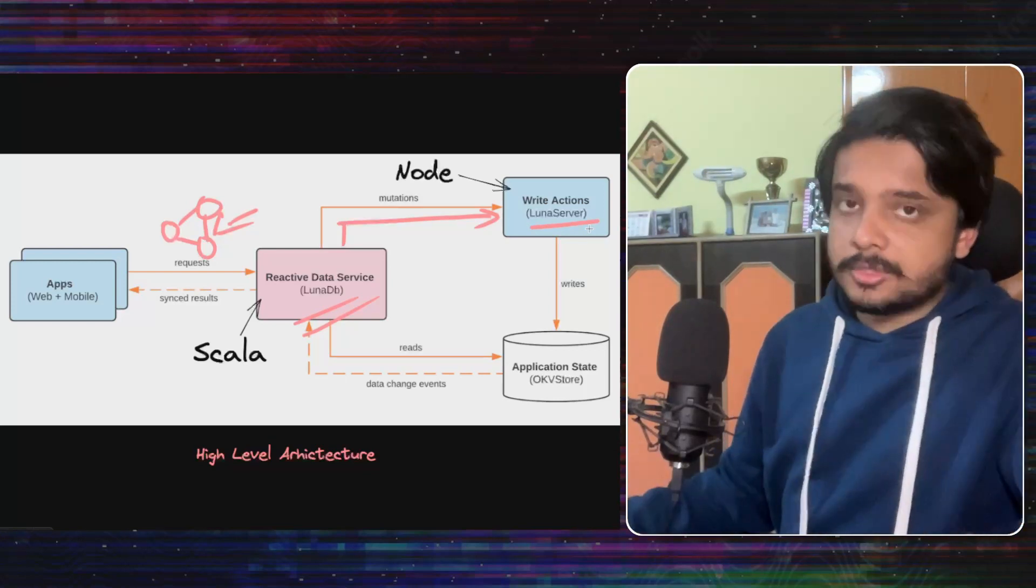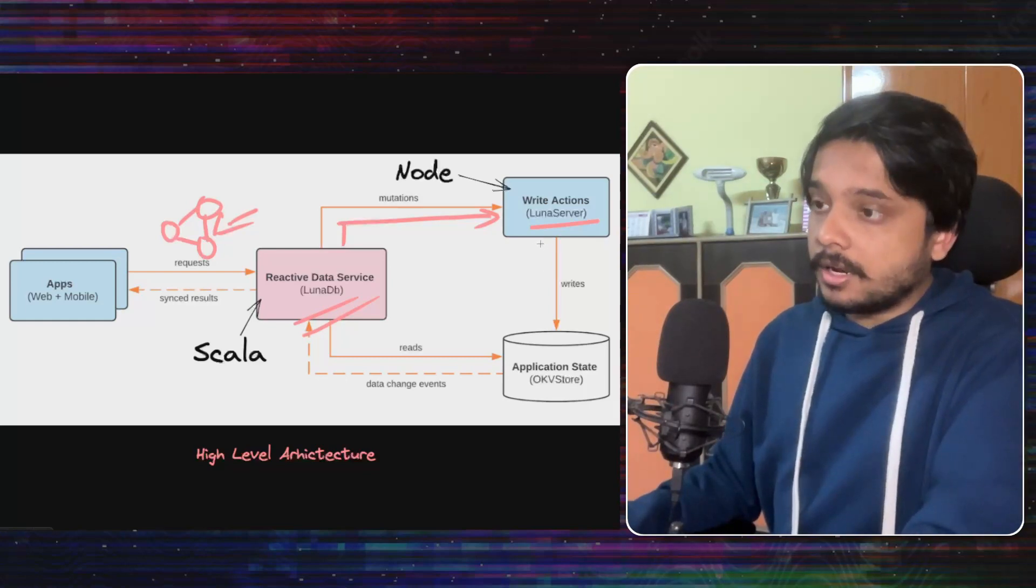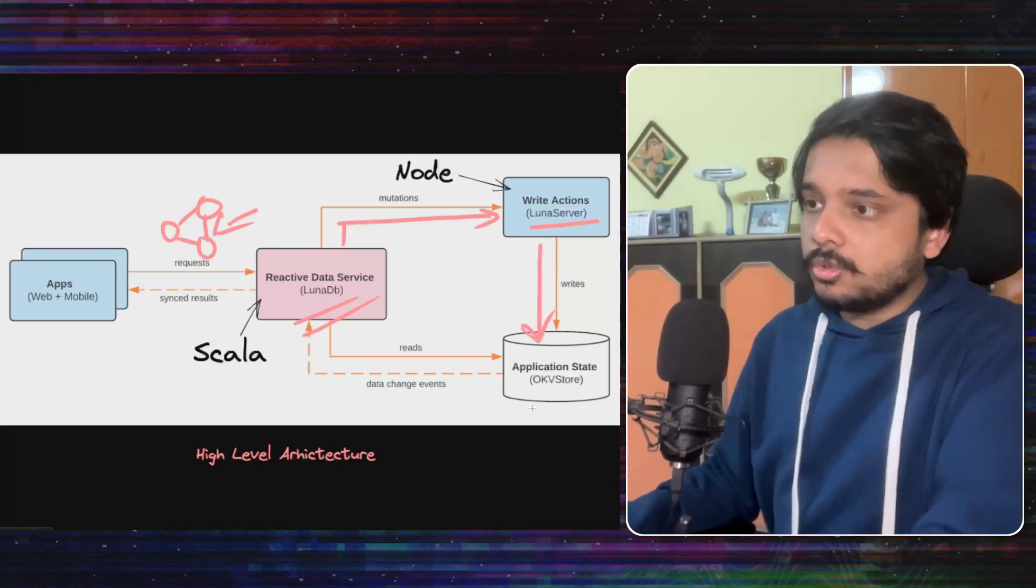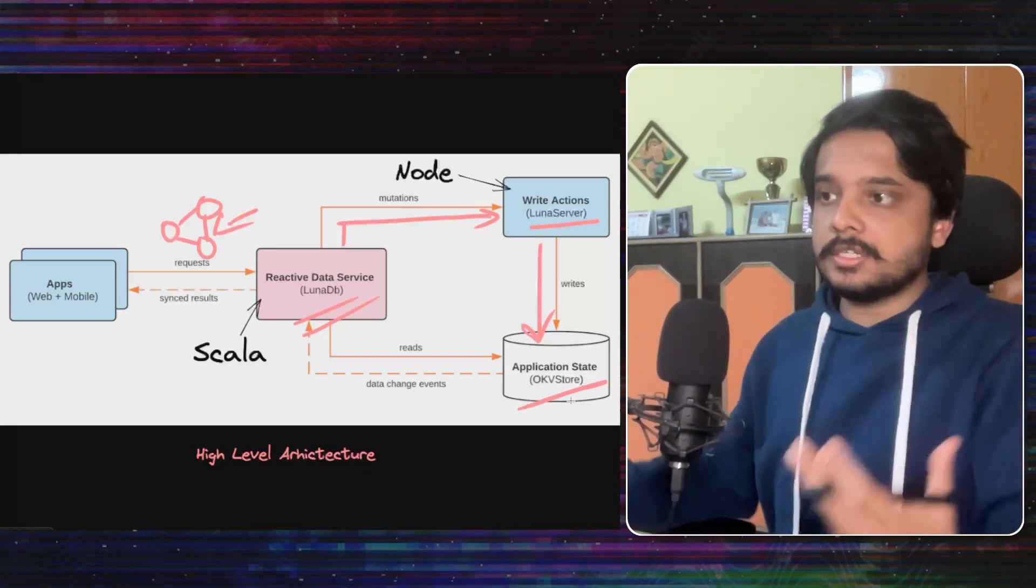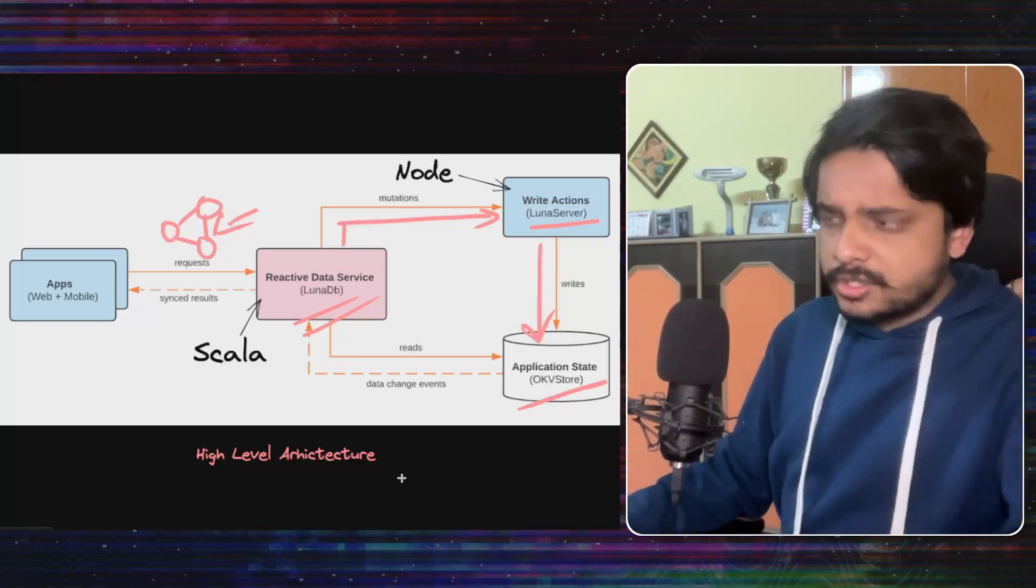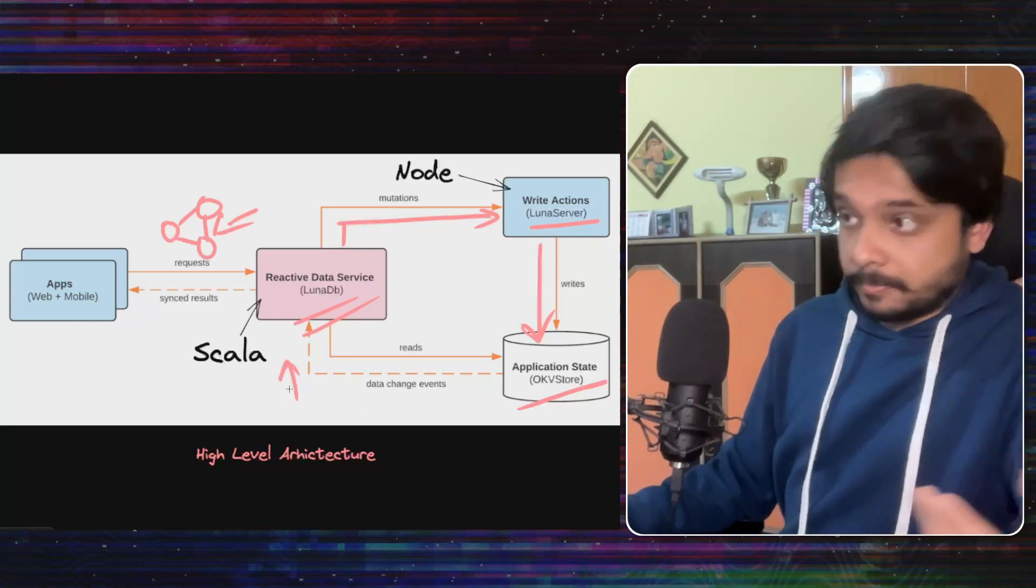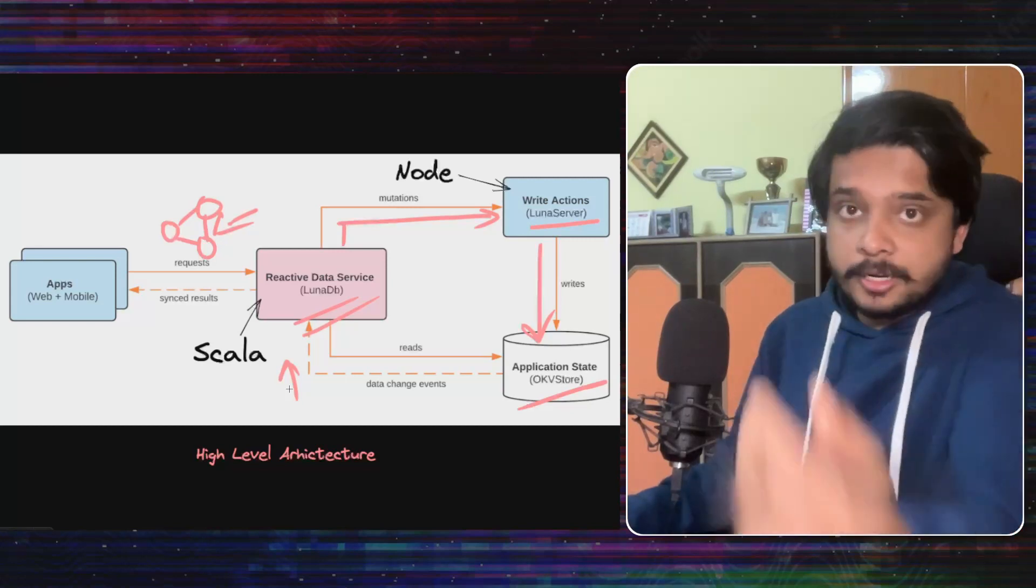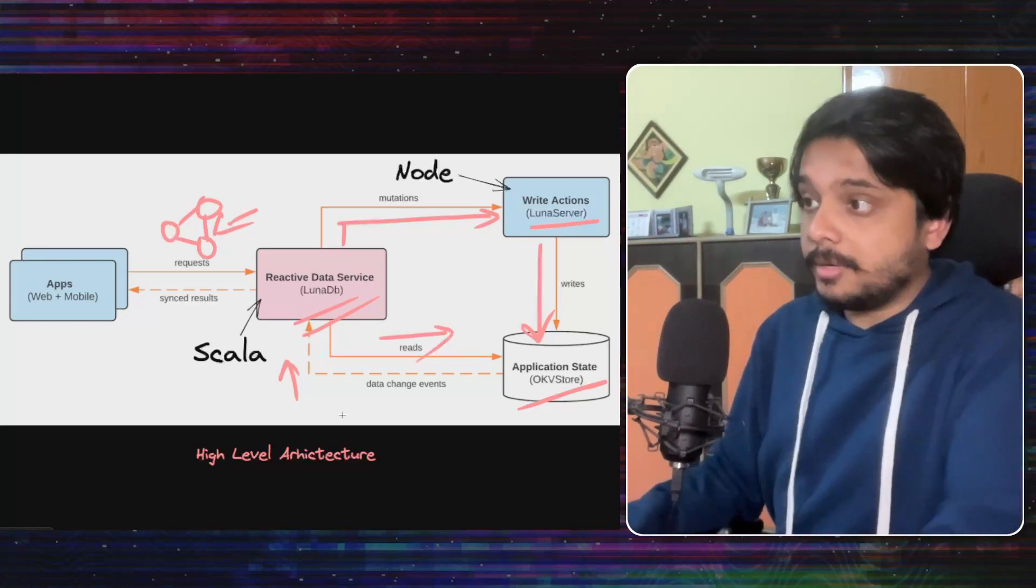Now, this Luna server is also a custom service they wrote in Node to orchestrate all this process. So the Luna server would write that data to that OKVStore that I talked about, and that is their main application state store. Then the OKVStore tells LunaDB, hey, I've got some updates for you. And LunaDB says, hey, really, you've got some updates? Okay, let me read it. So it goes ahead and reads whatever update it has.